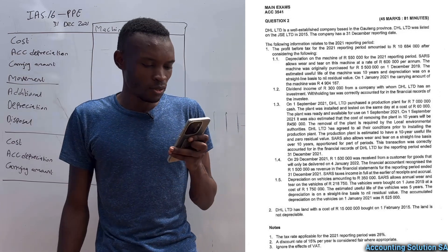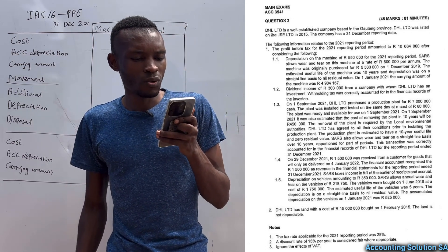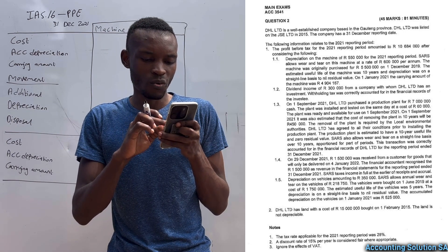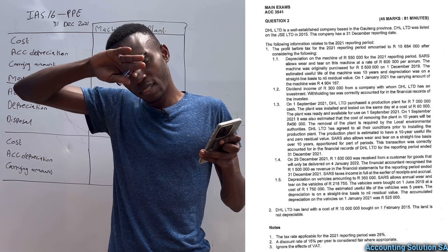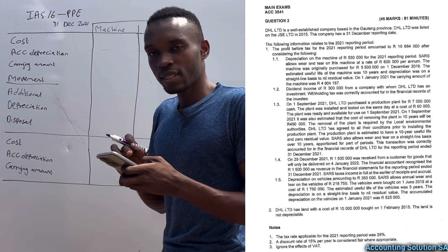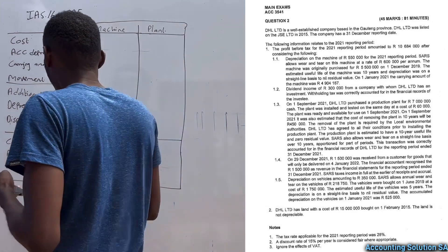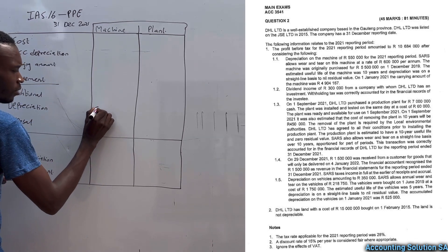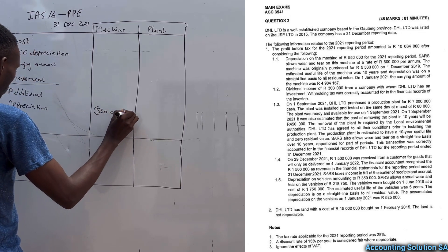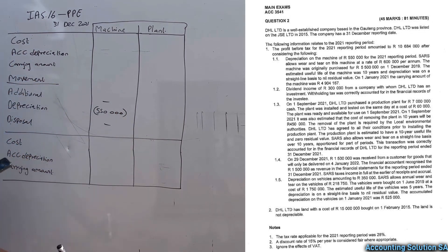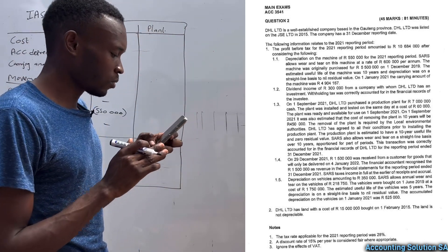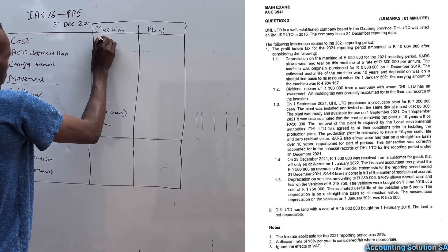The machine was originally purchased for 5,550,000 on 1 December 2019 — it was purchased in a previous year. They have already given us the depreciation for the year under the machine, which is 550,000. There is no disposal and no additional purchases.